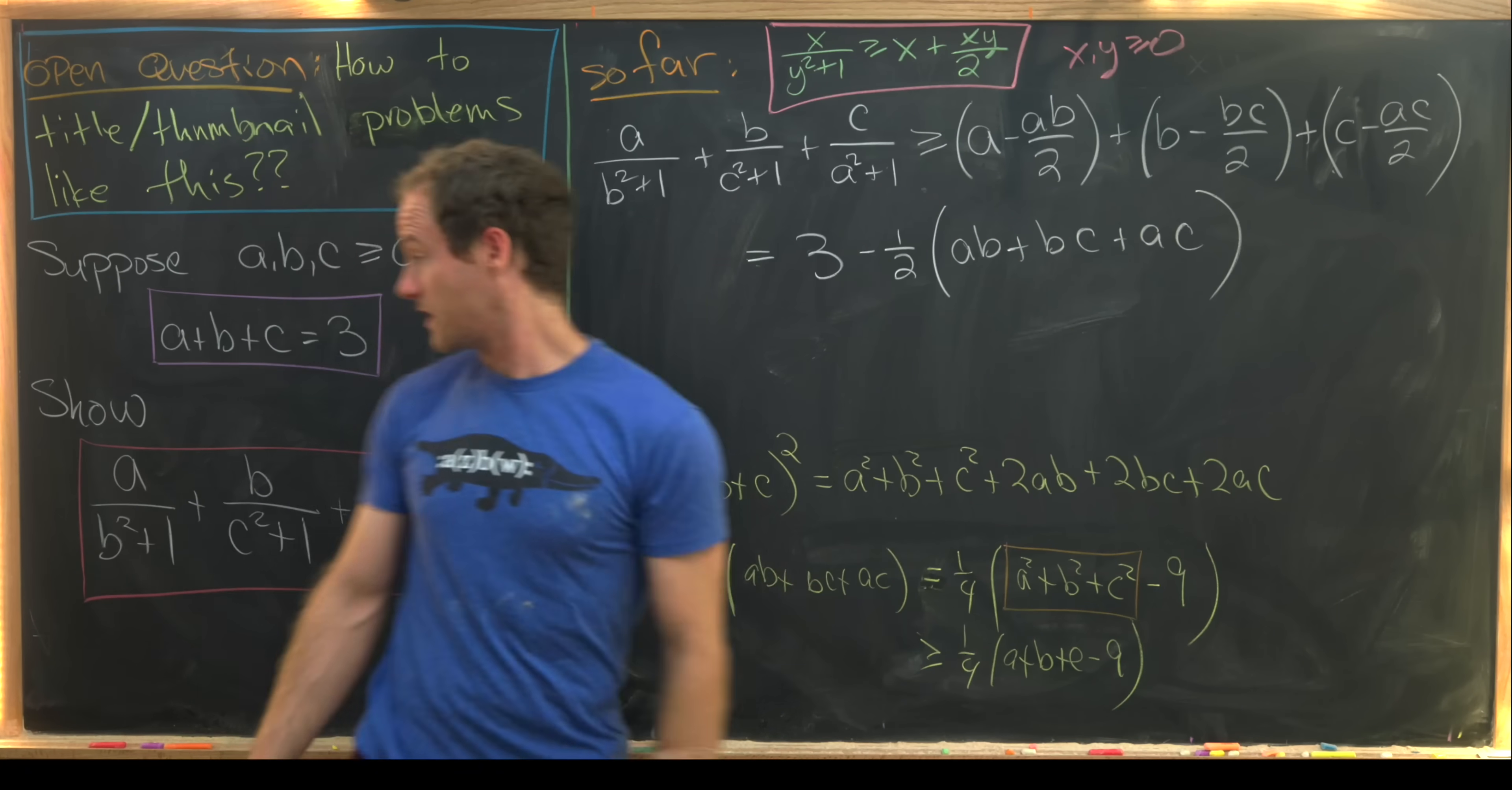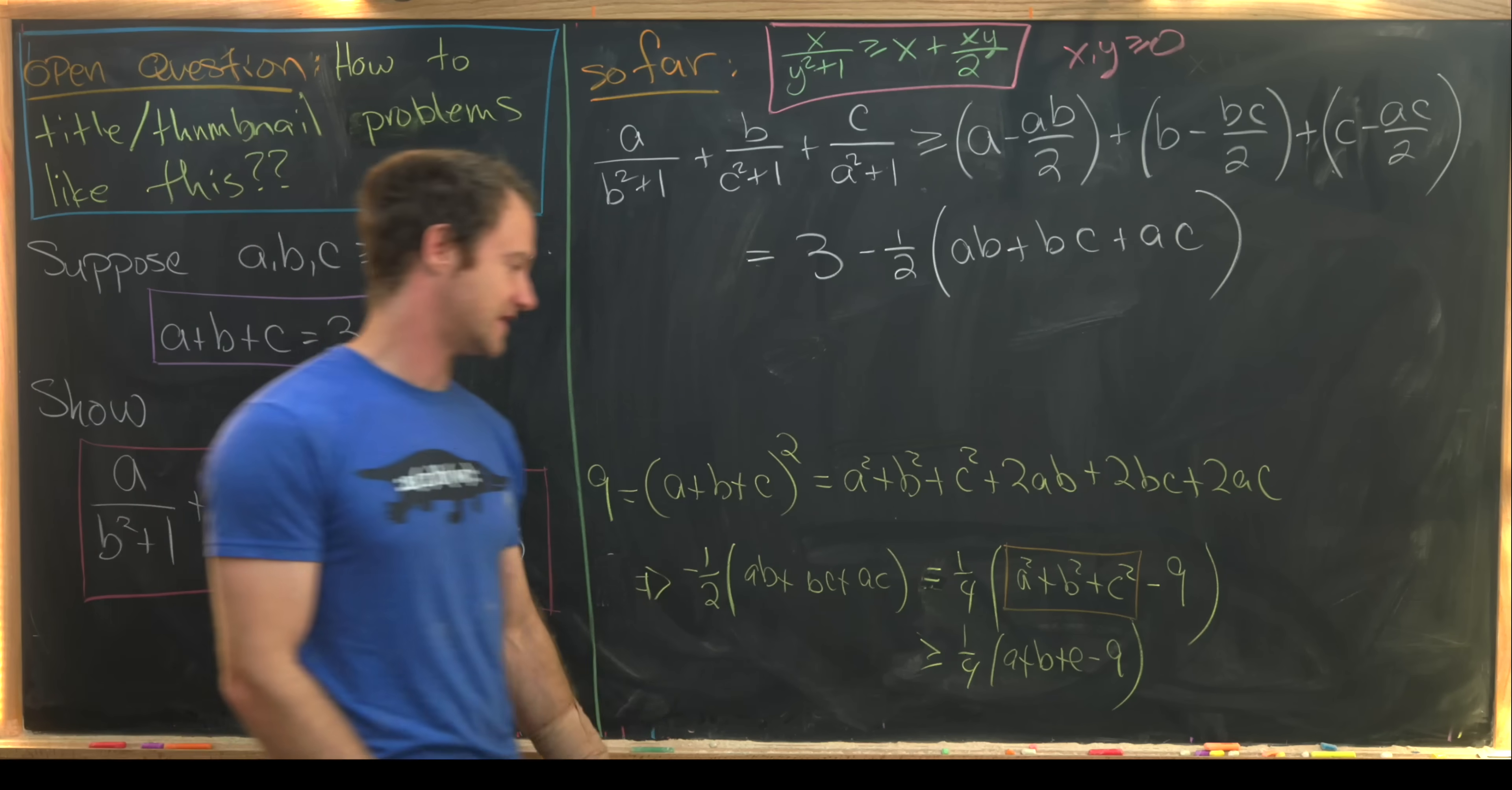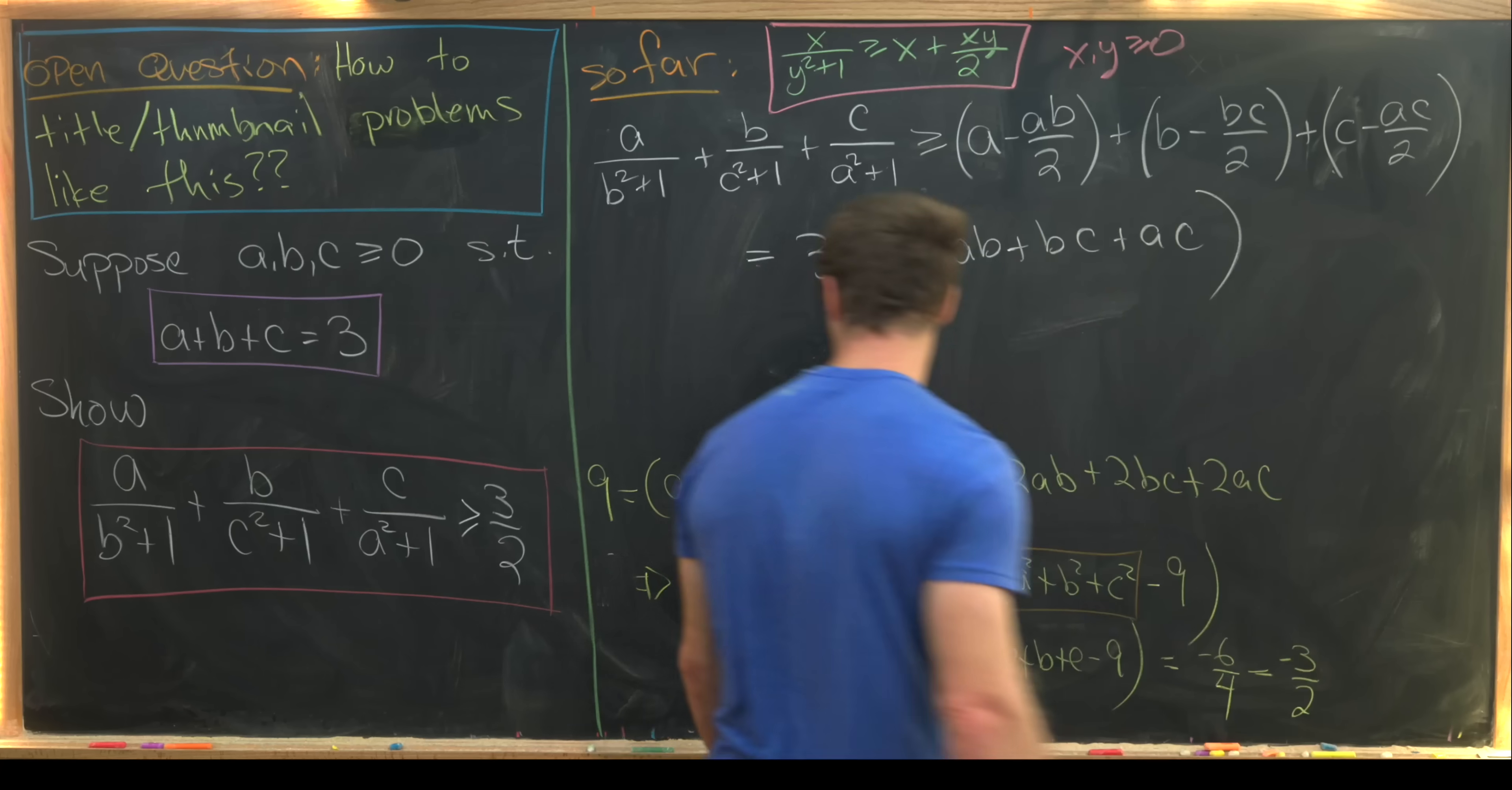But our given is that a plus b plus c equals 3. So that means we know a plus b plus c minus 9 is negative 6. So this is equal to negative 6 over 4, which is equal to minus 3 over 2.